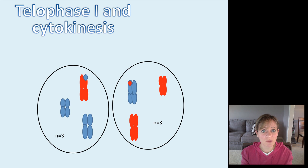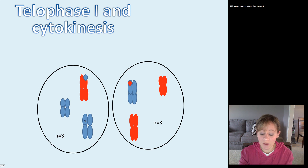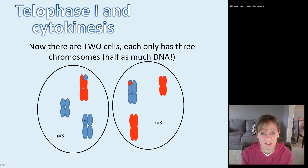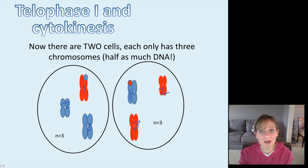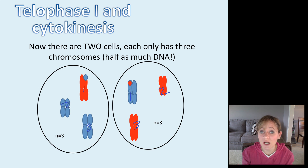Now we finish up meiosis I with telophase I and cytokinesis, very similar to mitosis. We've got the new cell membrane forming and a new nuclear envelope forming, and we now have two cells. At the end of meiosis I we have two cells, and as you can see, each only has three chromosomes — one, two, and three. So now N equals three. Already at the end of meiosis I we are haploid. We have reduced the chromosome number, which is why meiosis I is also called the reduction phase.